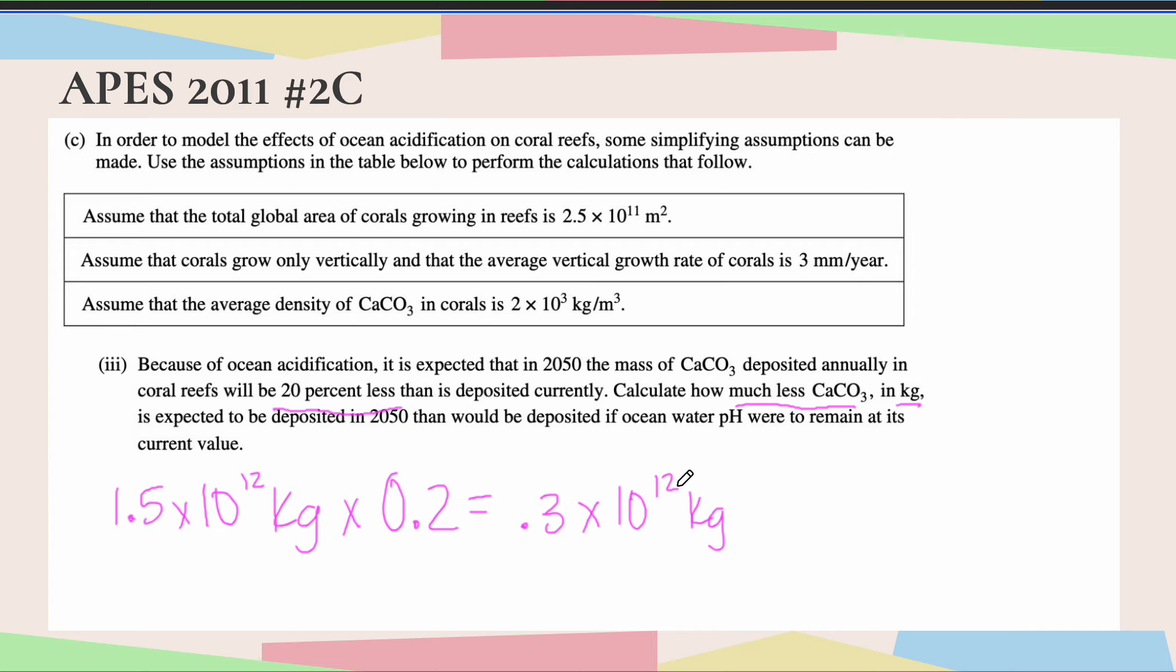But then I have to put this in proper scientific notation. So I'm going to move my decimal one to the right, and this would then become 3 times 10 to the 11th kilograms of CaCO3. There we go. Awesome. Thanks so much for watching, and I'll see you in the next one.